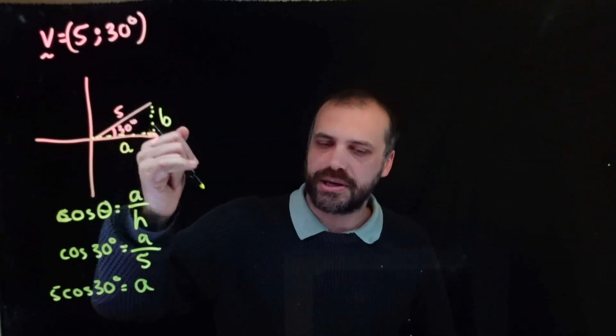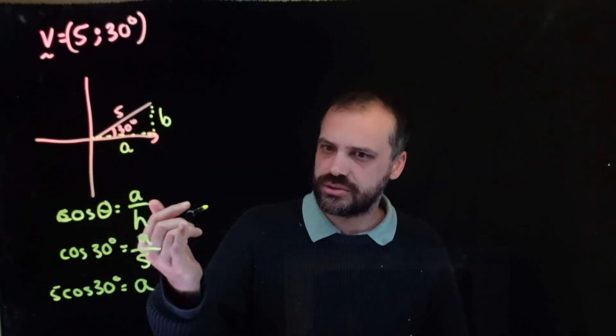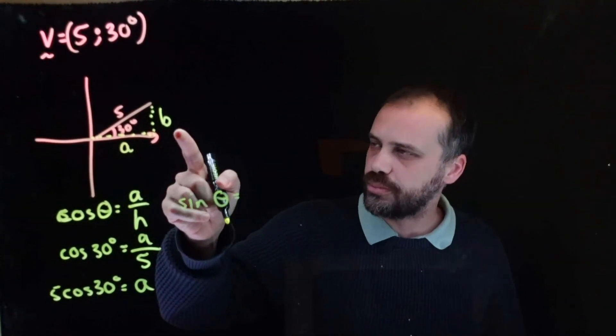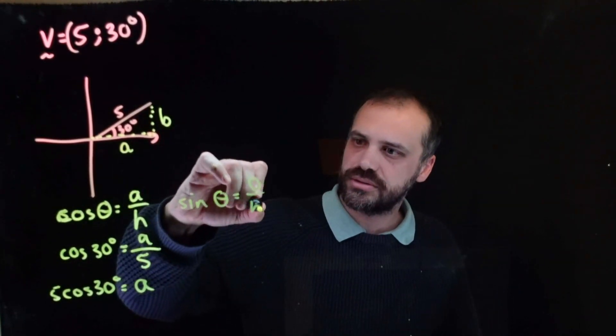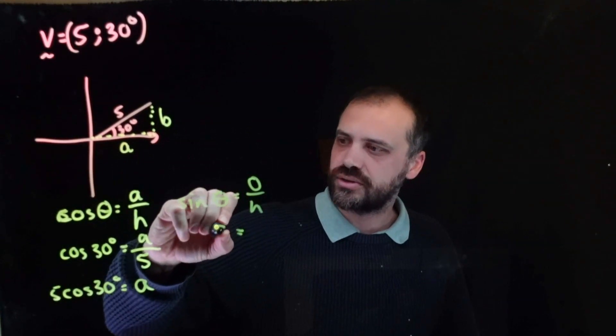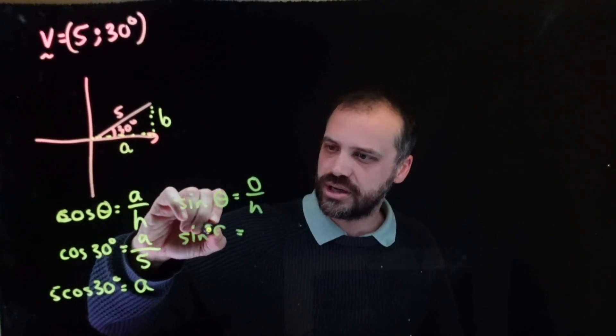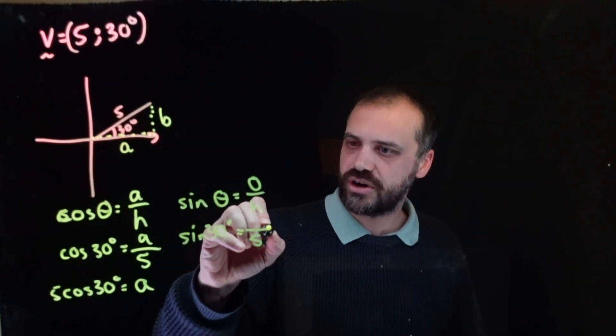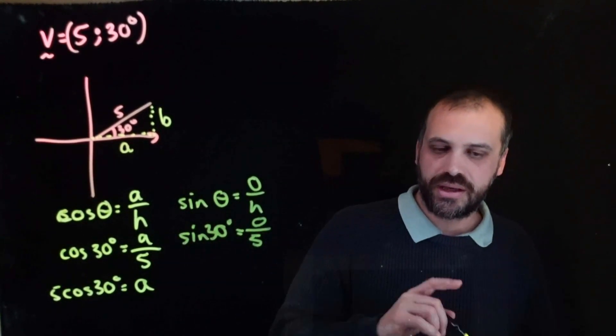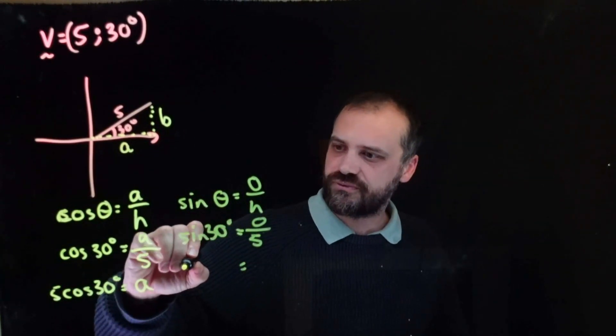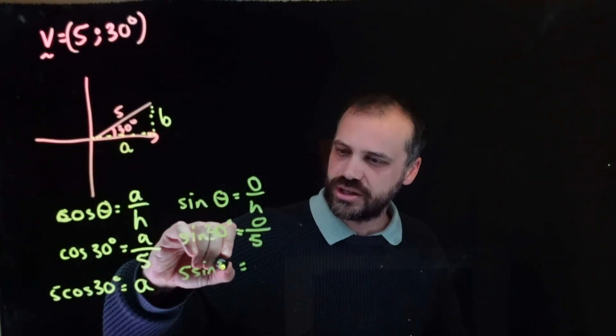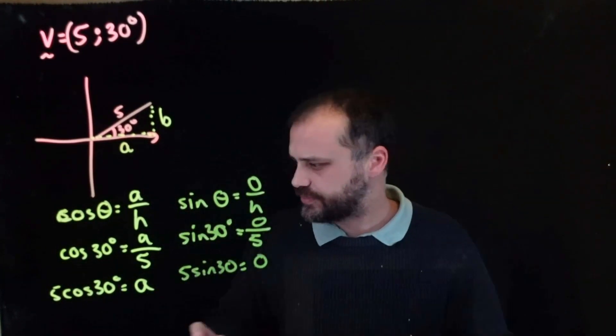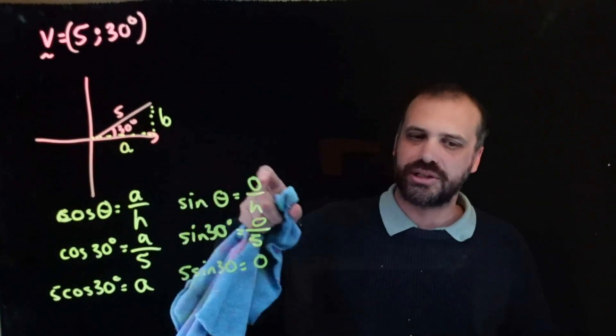Okay, what about b? We know the hypotenuse is 5, and that's going to be equal to opposite. We rearrange that to be 5 sin 30 equals the opposite. I should stop using the opposite here. It looks like a zero, and I've used the letter b. Let's make it b.